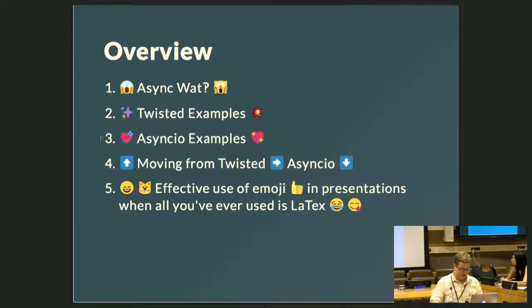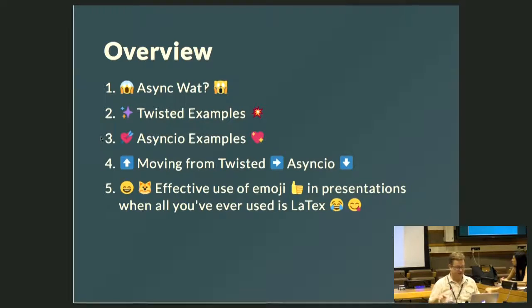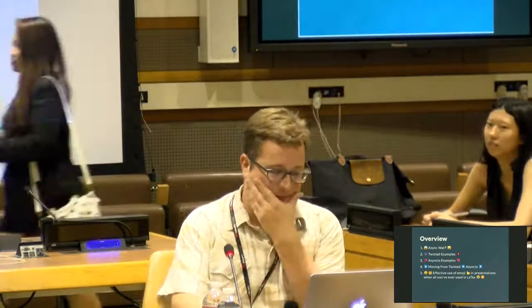First, to give you an overview of what I want to talk about: first is what I mean by async, some Twisted examples followed by some async I.O. examples, then moving from Twisted to async I.O. And if I have time I'll talk about the effective use of emoji in presentations when all you've ever used is LaTeX. I'm using a tool called Mark where you can write markdown and it shows up in real time, which is pretty cool.